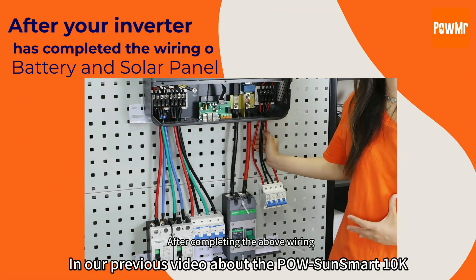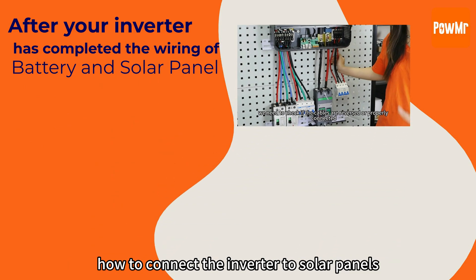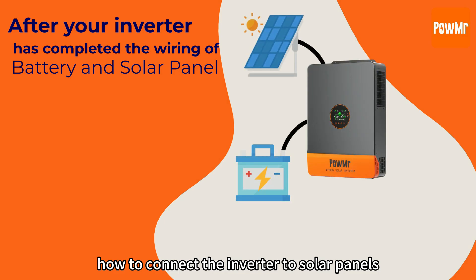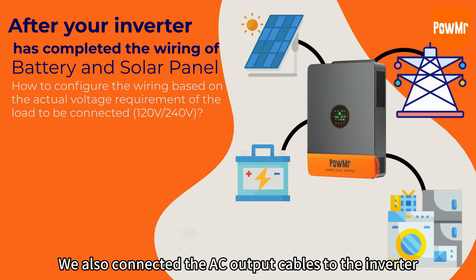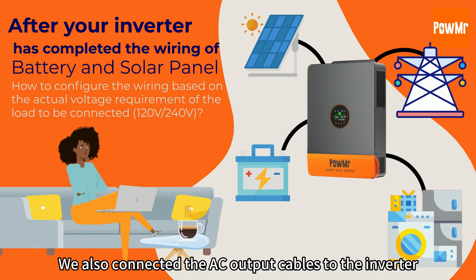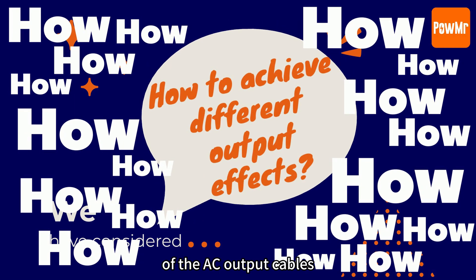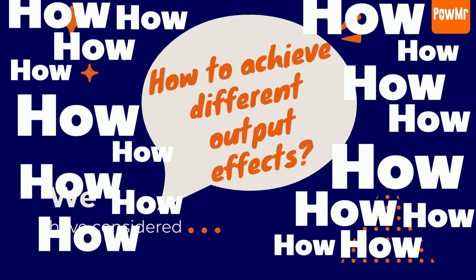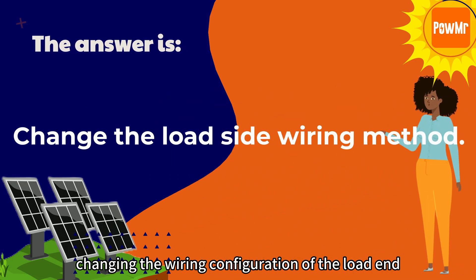In our previous video about the Pogson Smart 10K, we demonstrated how to connect the inverter to solar panels, batteries, and AC input. We also connected the AC output cables to the inverter. But how should we complete the connection of the AC output cables to the other end of the load based on the actual load situation? The answer lies in changing the wiring configuration of the load end.